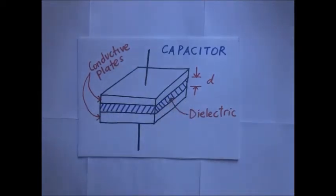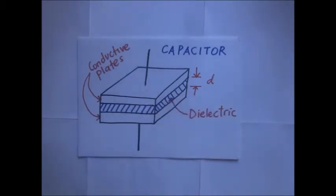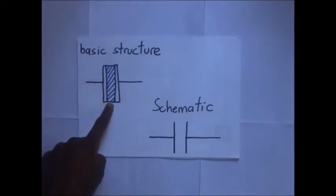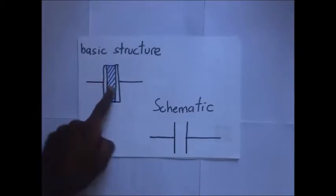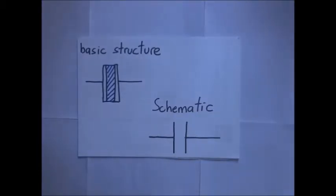In between the two plates is an insulator, which is what we call the dielectric. The dielectric material can either be air, paper, or oil. The metal plates can be square, circular, rectangular, or even cylindrical, depending on the application and voltage rating. This is the cross-sectional view of the basic structure of the capacitor, and this is the schematic symbol used when drawing it in an electric circuit.